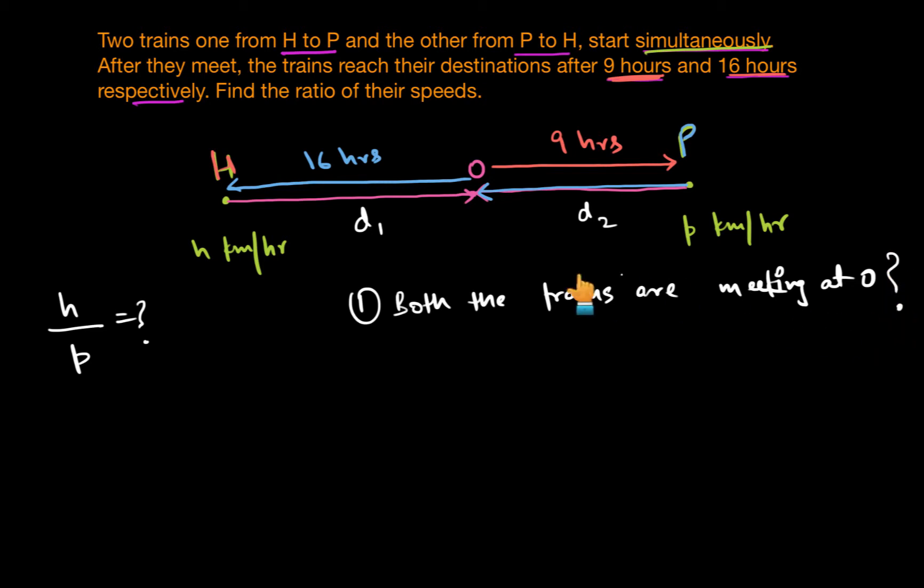What does this mean? This means that whatever amount of time the train that started from H took to reach O, same amount of time is taken by the train which started from P to reach point O. They have different speeds, they would cover different distances, but they have to travel for the same amount of time if they are meeting at O.